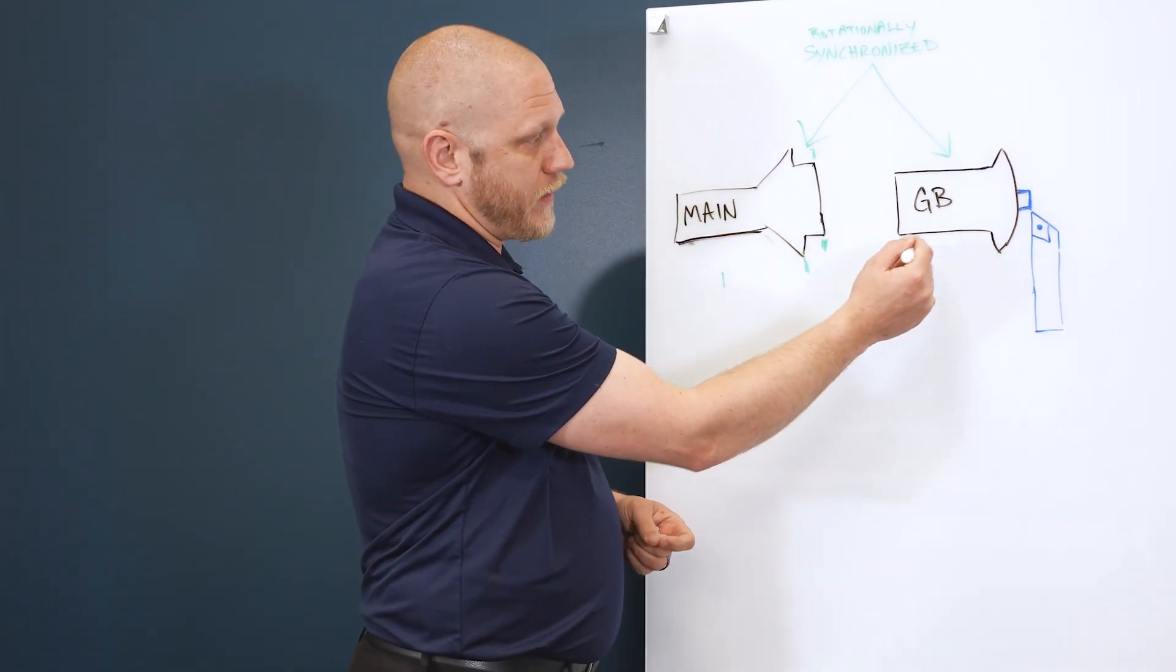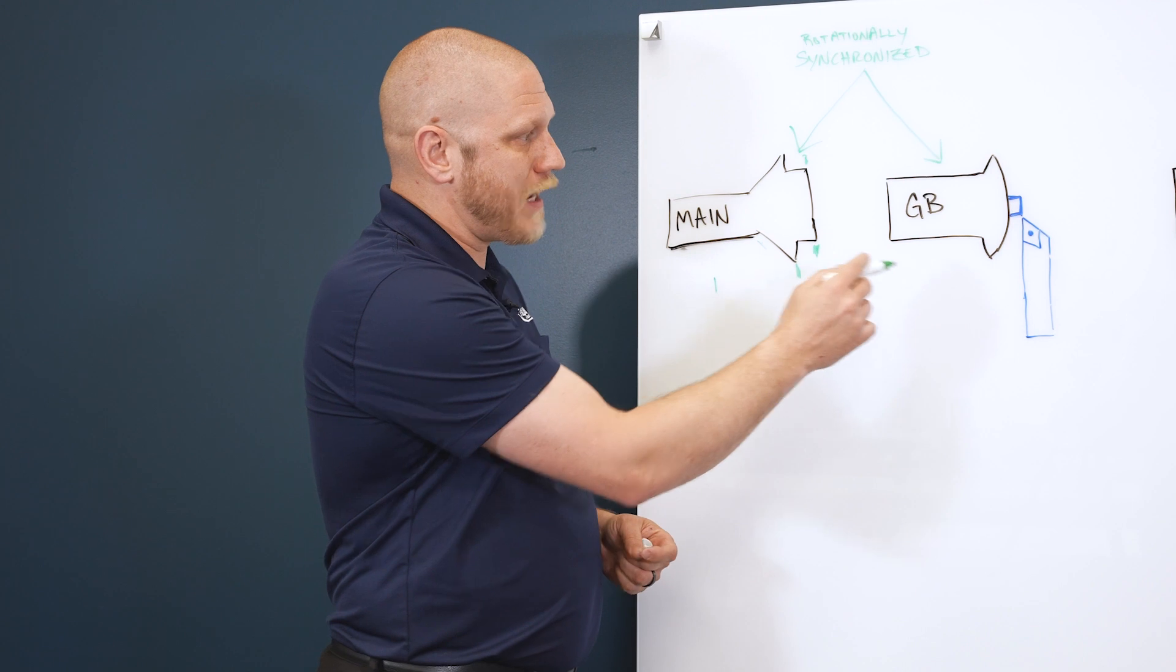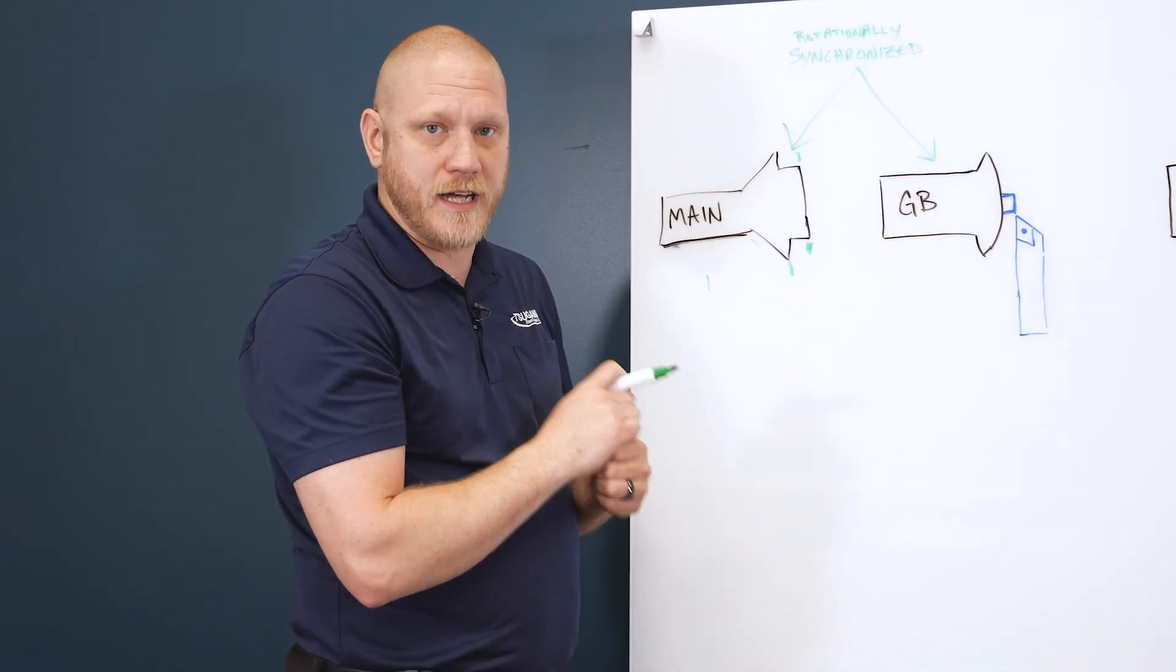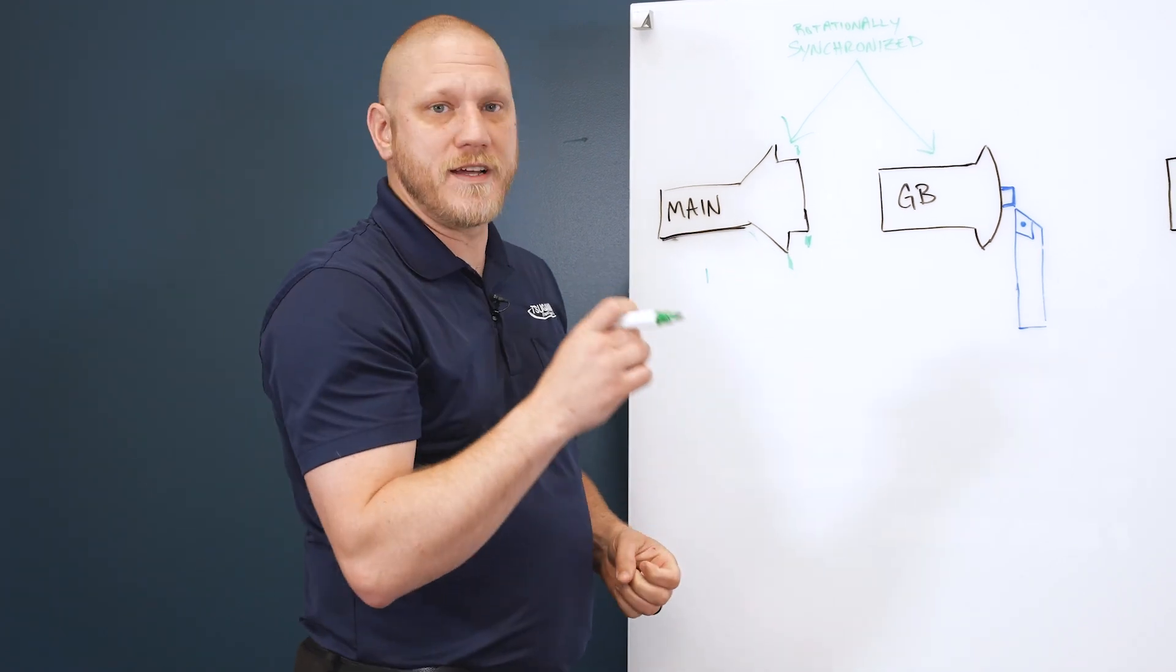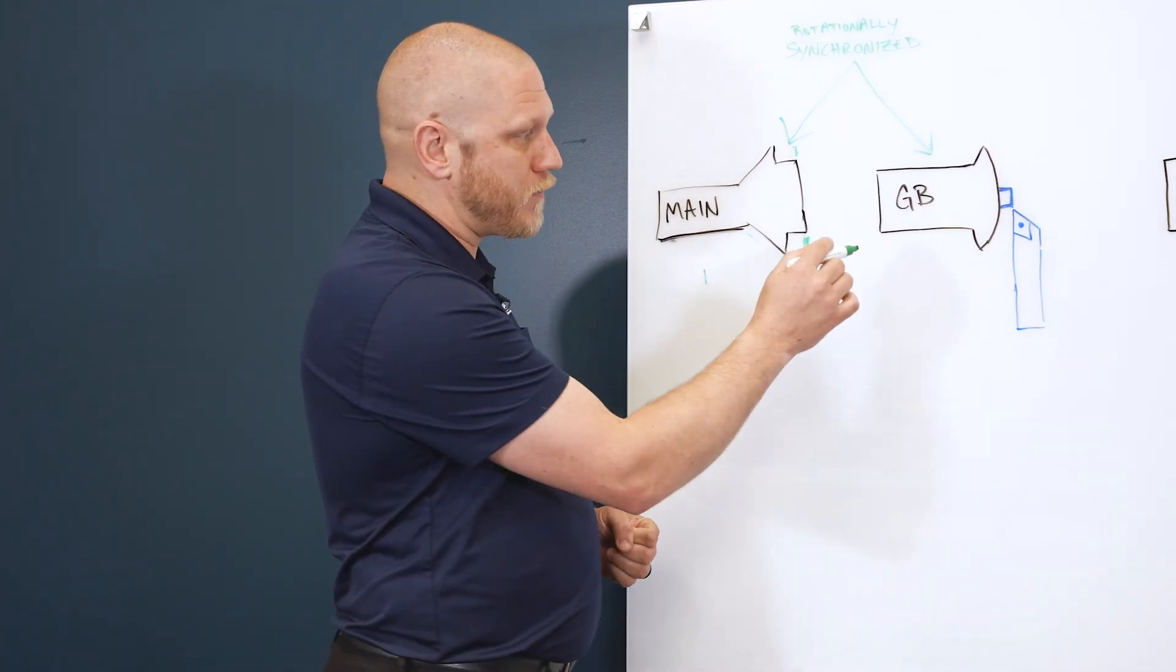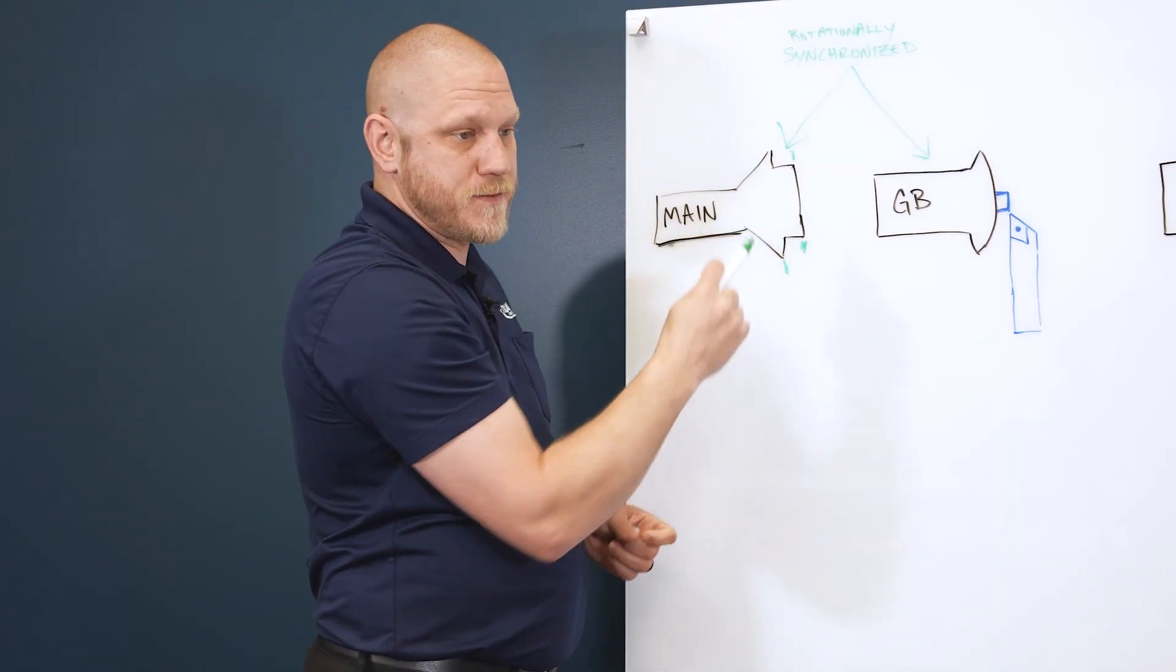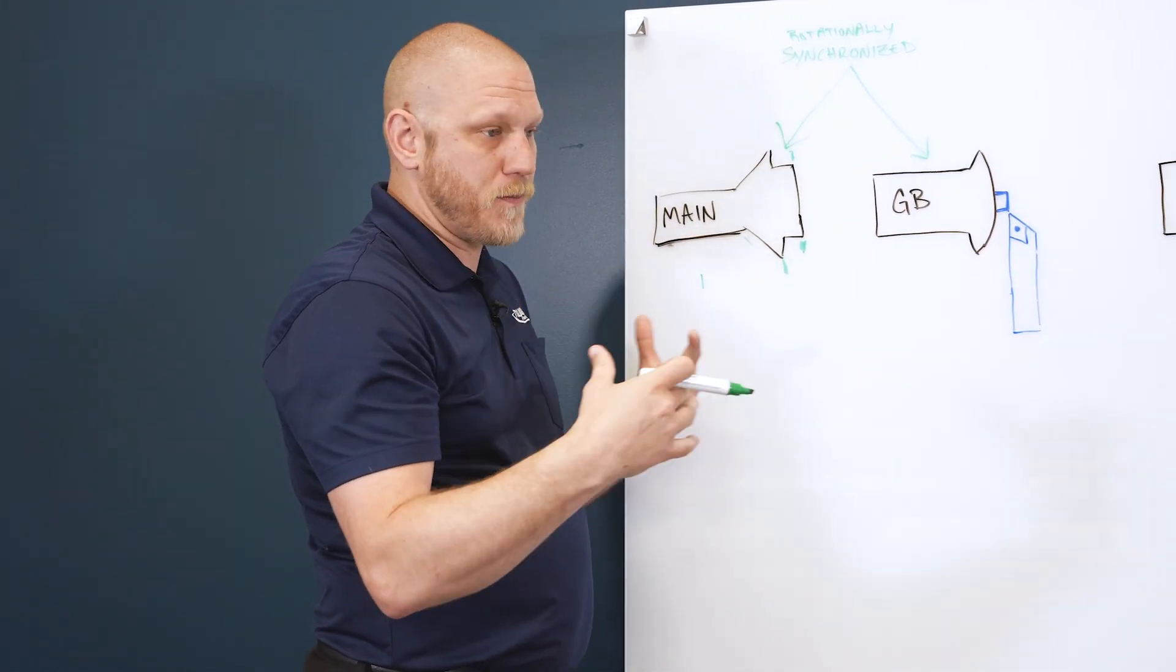Whereas the guide bushing, on the other hand, is a little bit different. The guide bushing never actually clamps the material. It's not supposed to clamp down like a collet is. The guide bushing is made to be a very slip fit around the material. So the guide bushing actually rotates synchronized with the main spindle. They spin together, same RPM all the time.